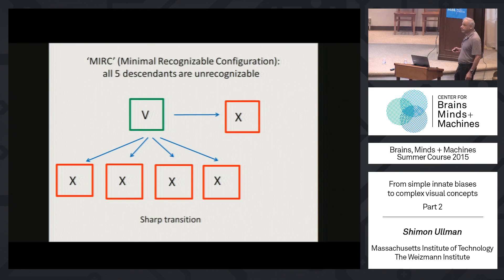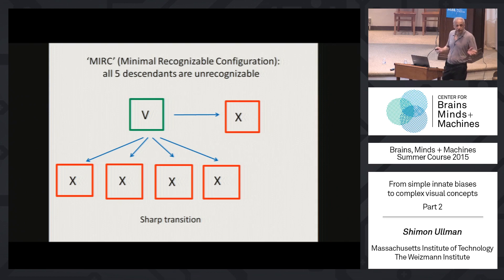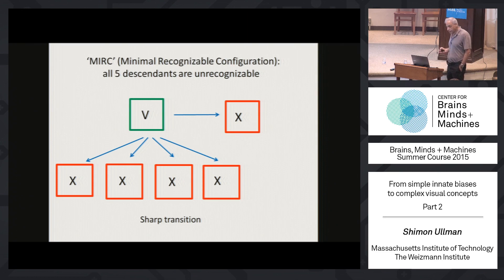A very interesting thing we found is that there is a sharp transition when you get to the level of the minimal images. You go down, you recognize it, and then there is a sharp transition — it suddenly becomes unrecognizable to the large majority of people. I'll show you some examples for you to try, to see how these minimal images look at the recognizable level versus the unrecognizable level.